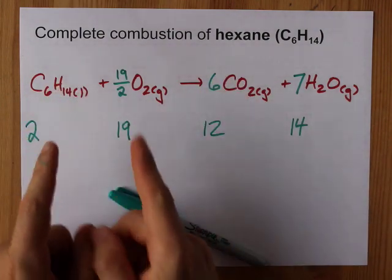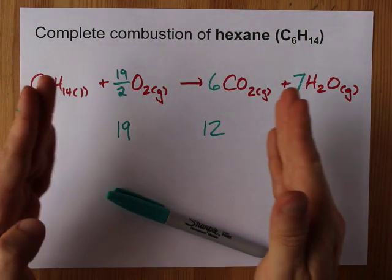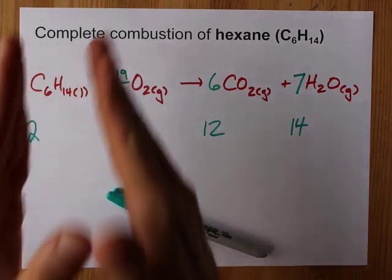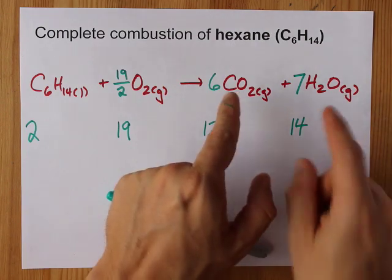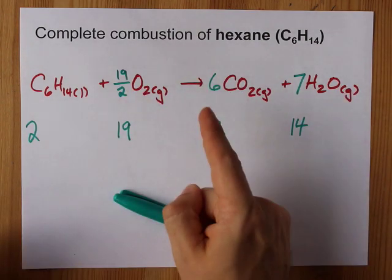Complete combustion is reacting it with oxygen to make carbon dioxide and water. You don't make extra stuff like carbon monoxide and soot because it's complete. You're going to oxidize carbon and hydrogen as much as possible. And here you go. Dunzo. Best of luck.